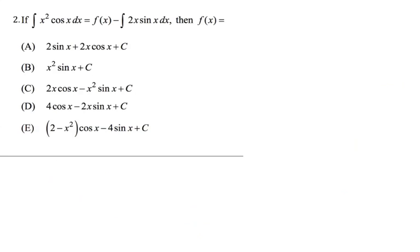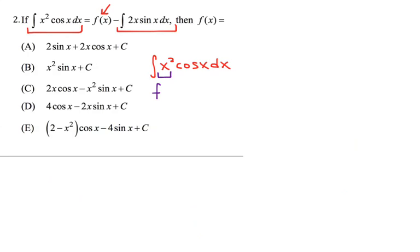Let's move on to the next question. Here we have integrals in two different locations and some sort of function f of x in the middle. This question is looking for integration by parts — the opposite of the product rule. We have x squared and cosine of x dx. If you assume that x squared is f of x and cosine of x dx is g prime of x...